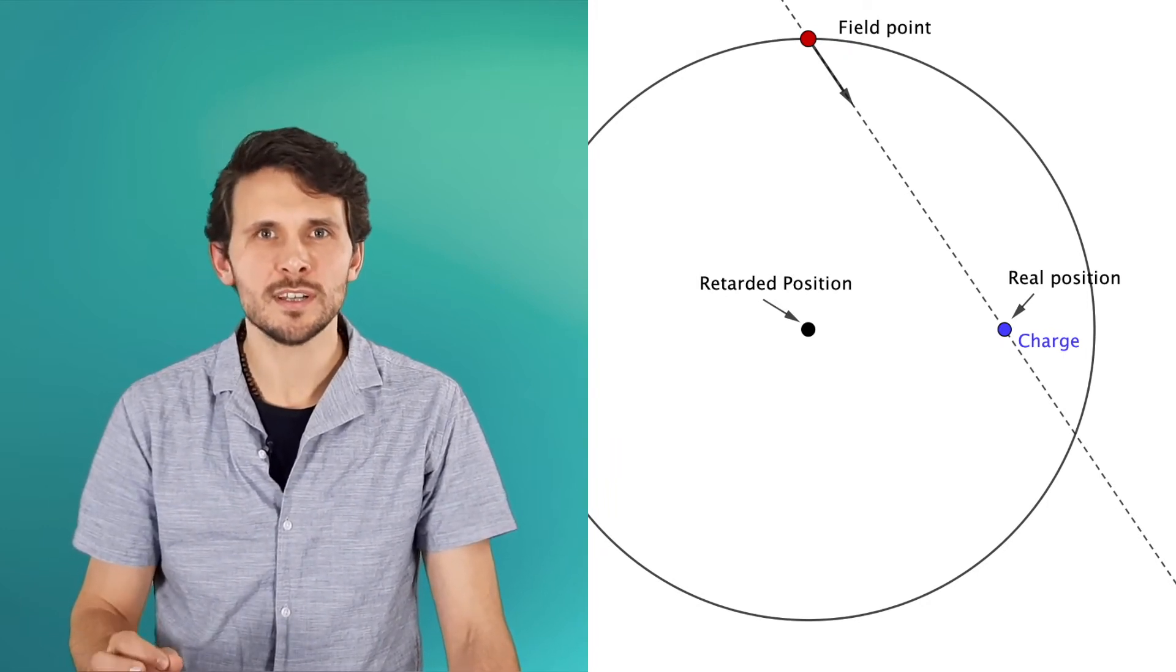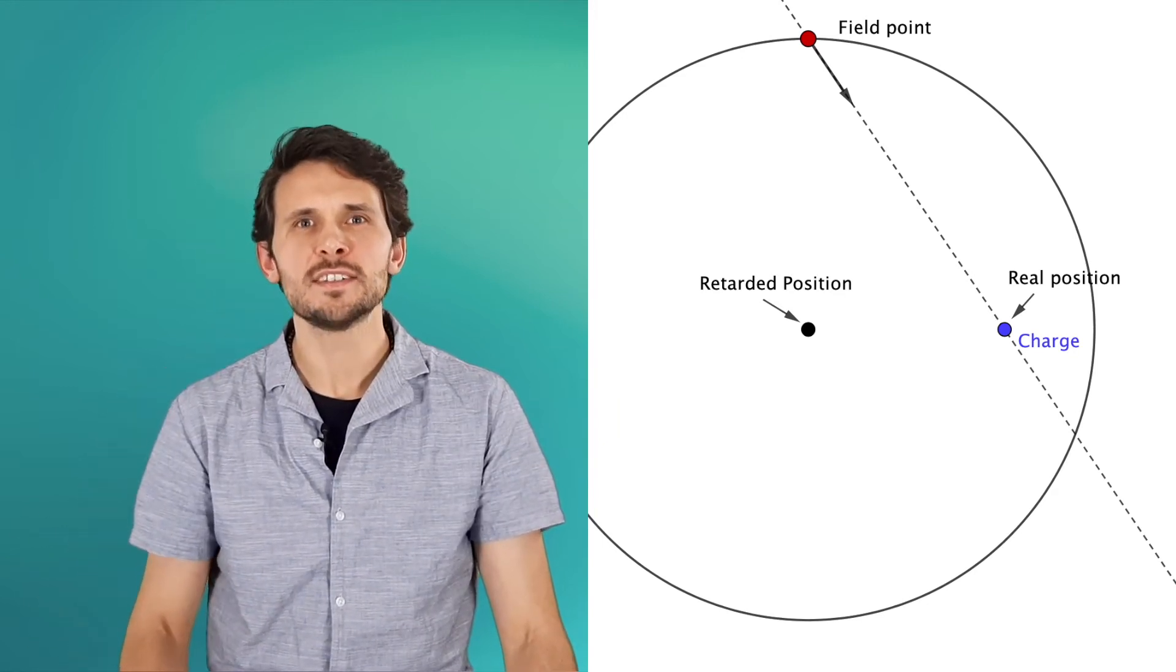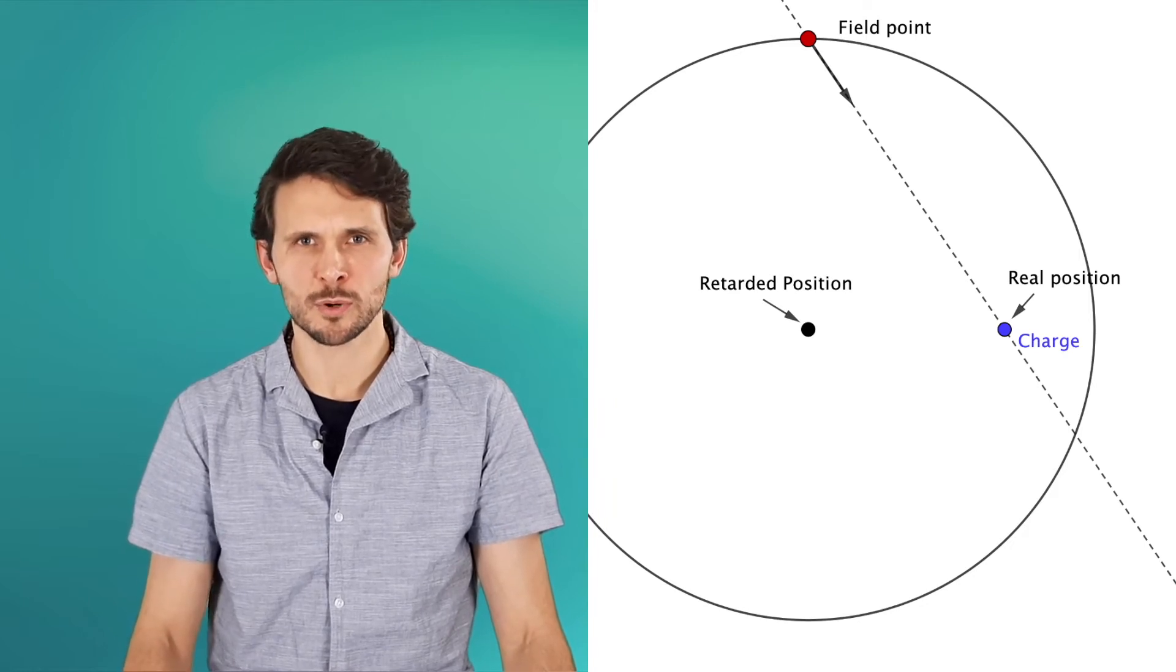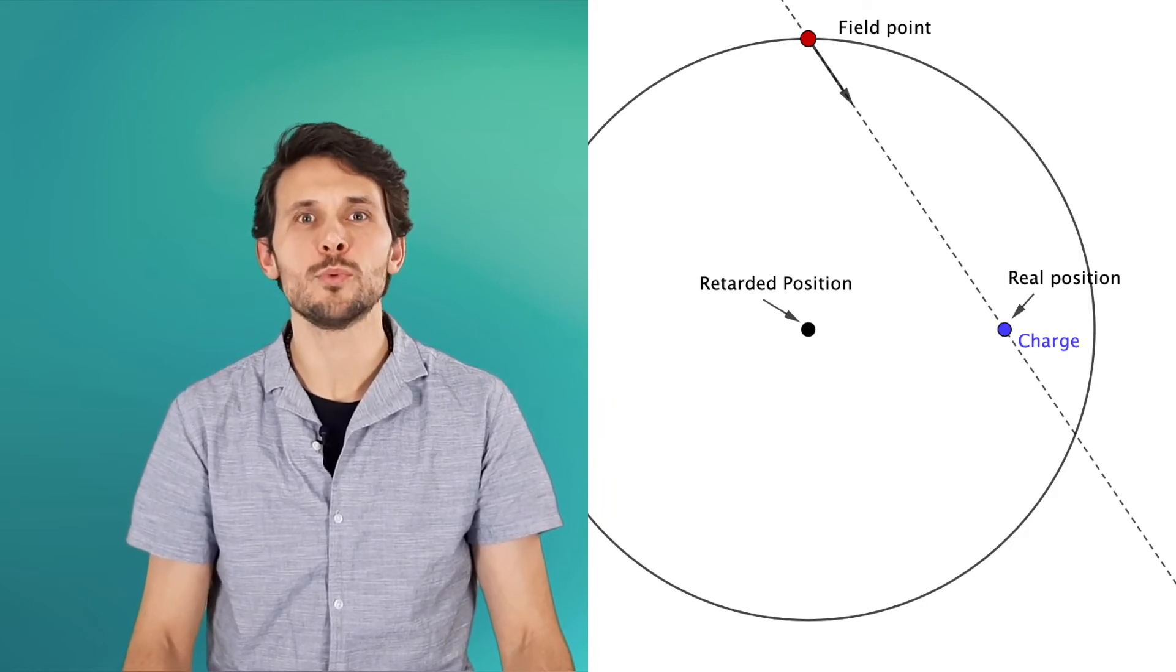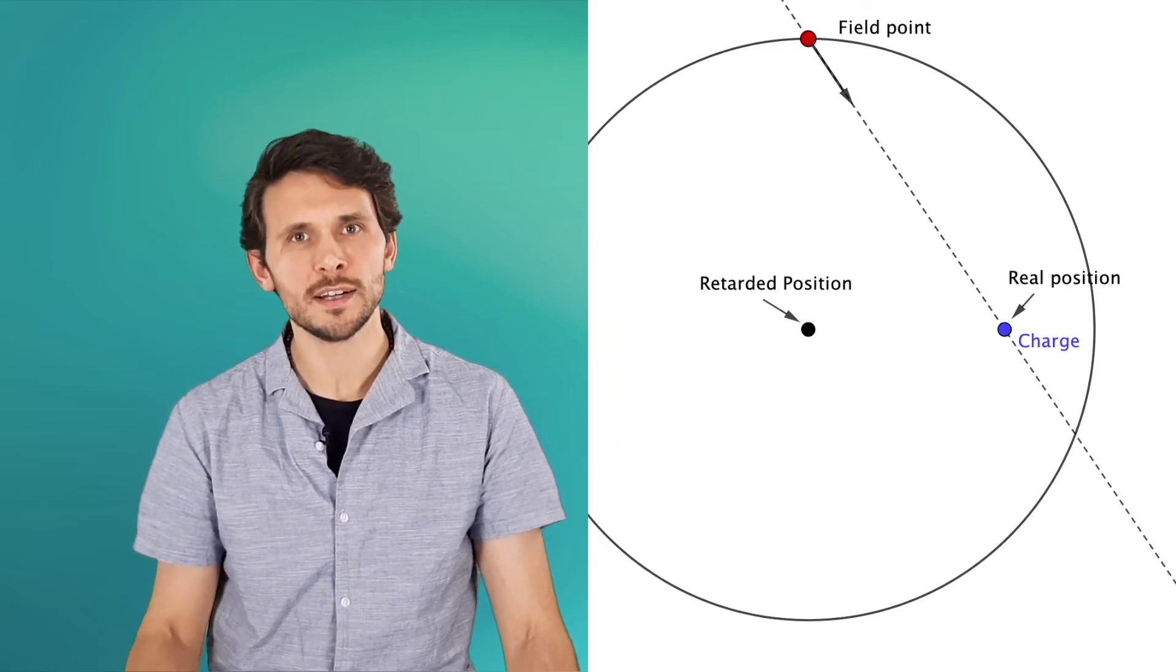While the present time position is known as the real position. Heaviside's equation surprisingly shows us that the field of the charge in constant motion is directed towards the real position of the charge, even though it was emitted at some retarded position. This indeed seems a bit weird.